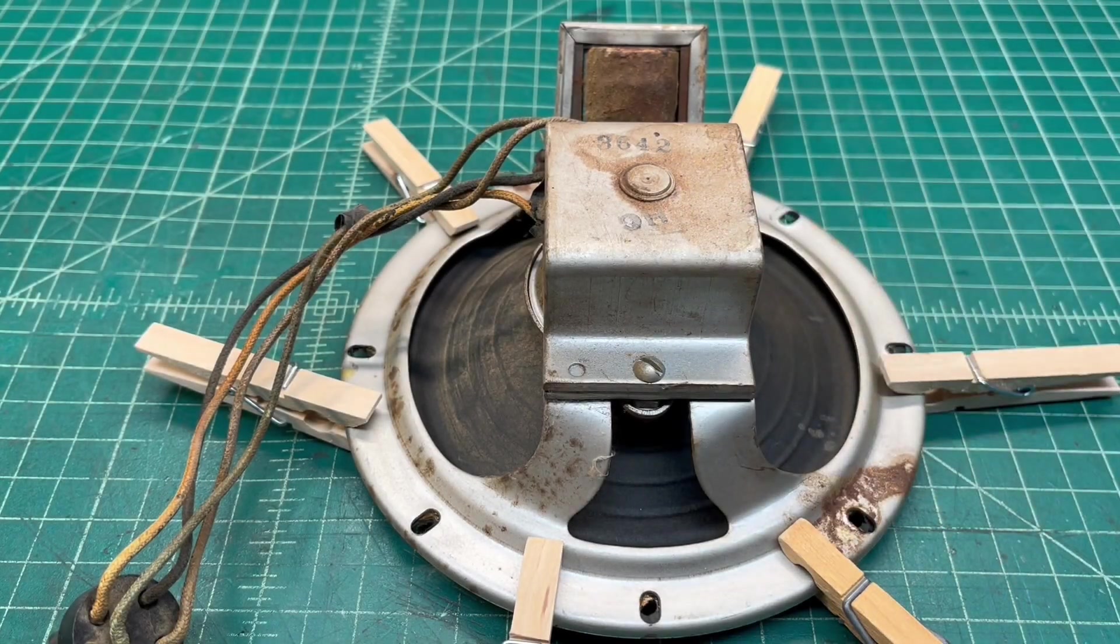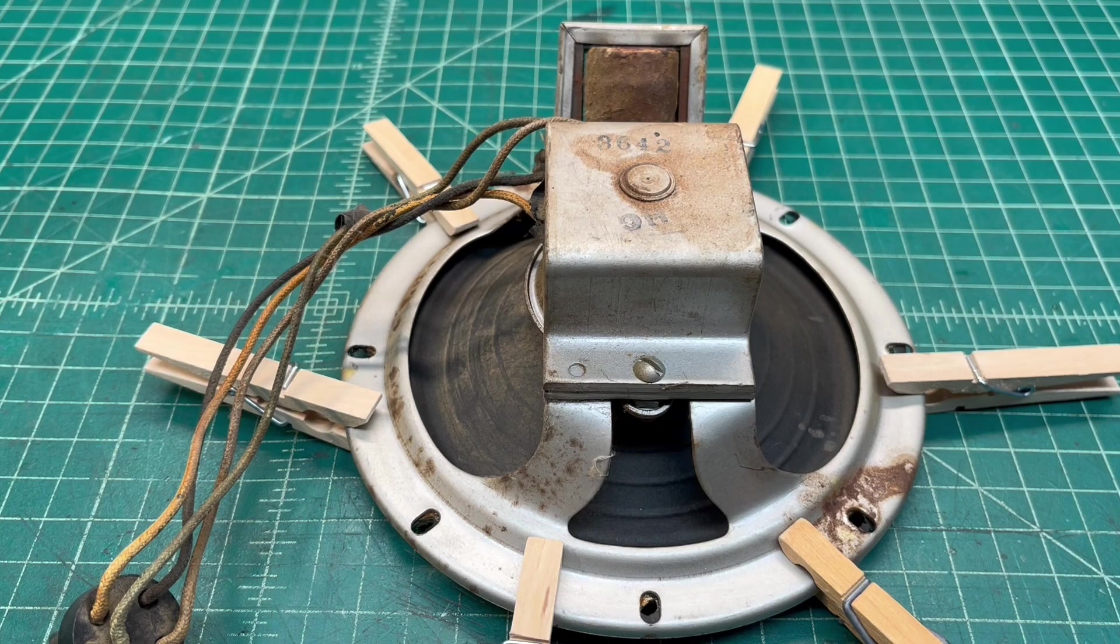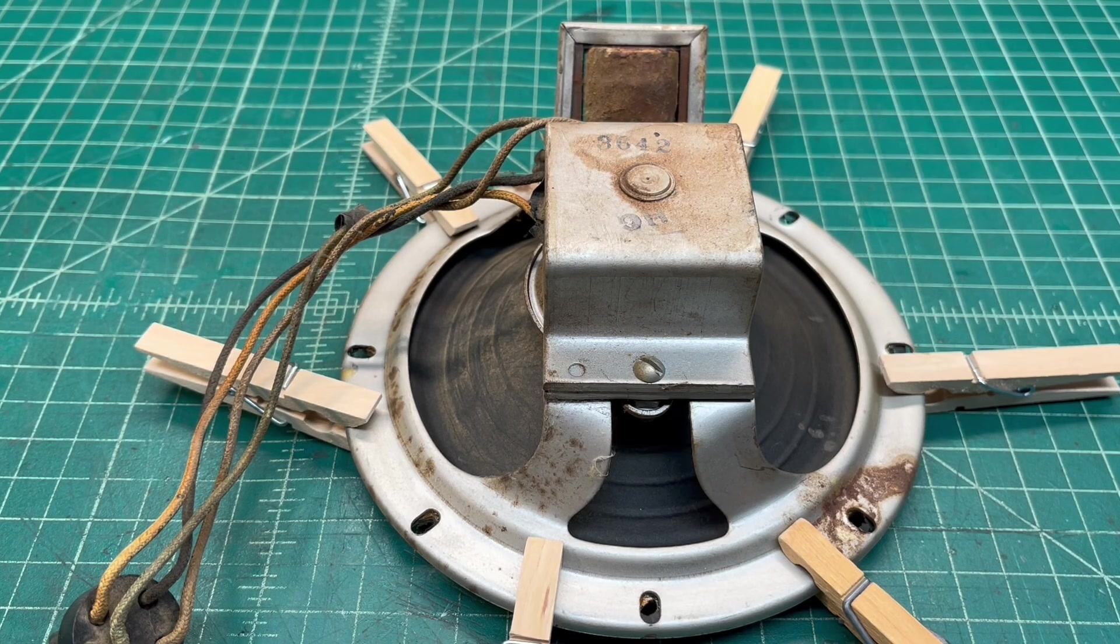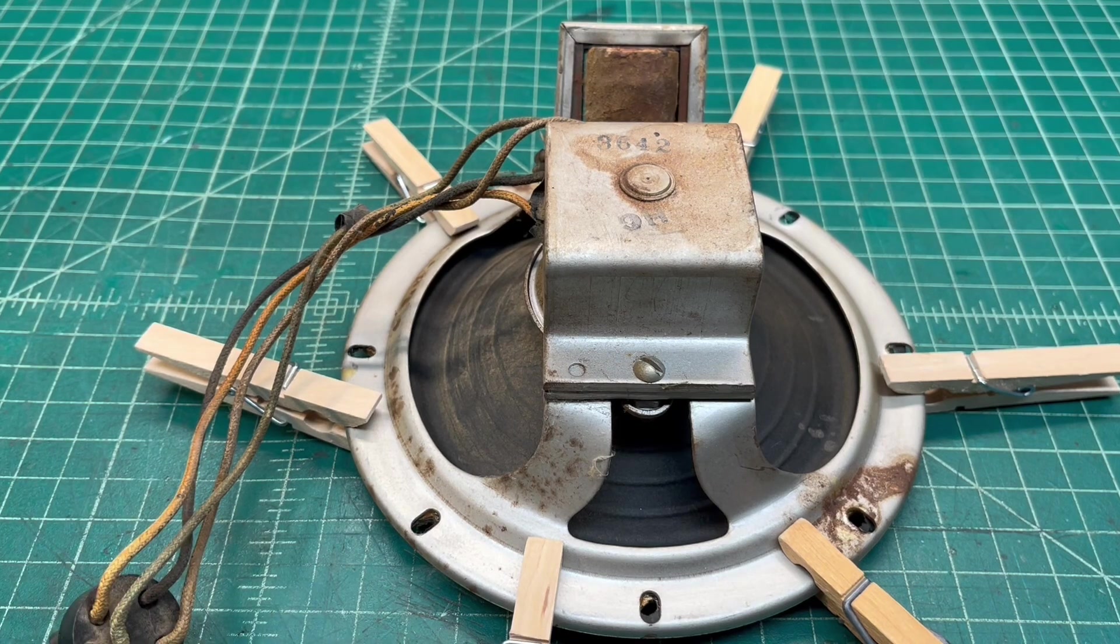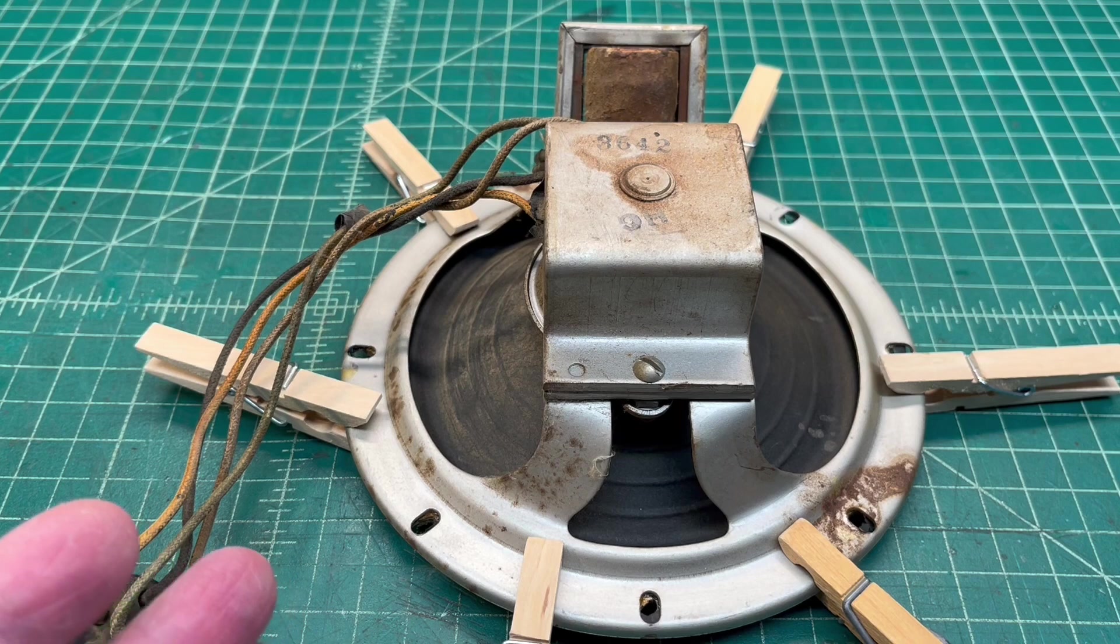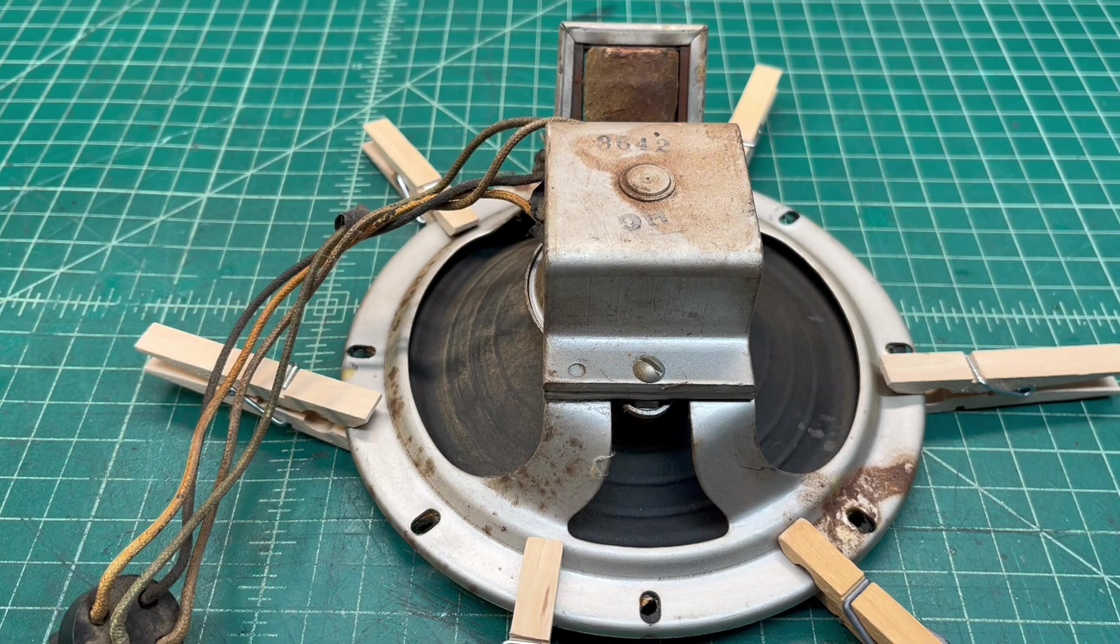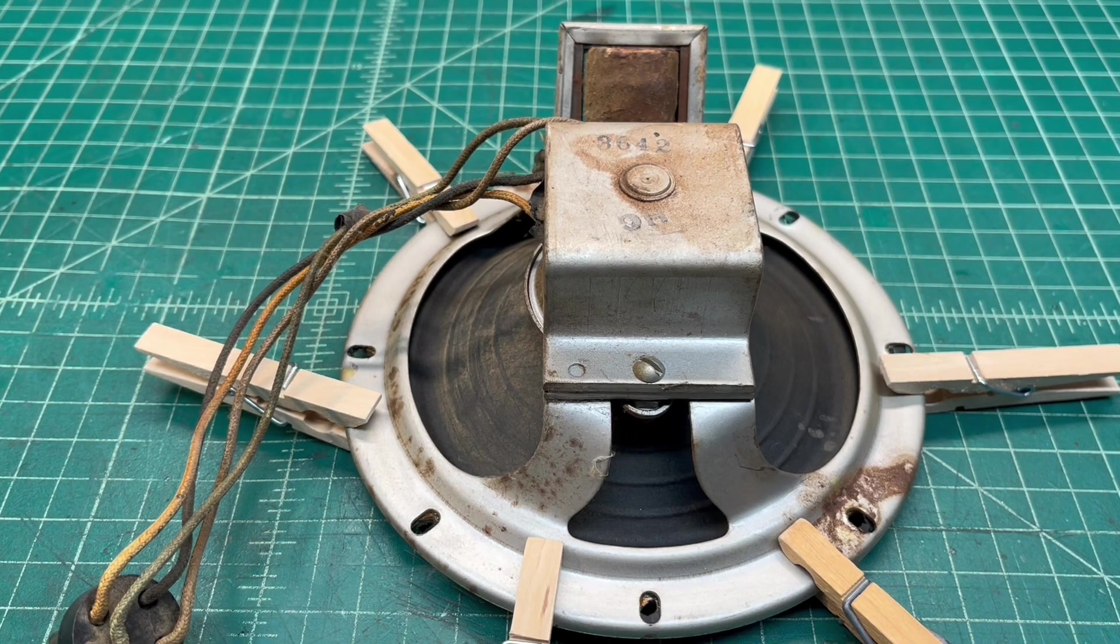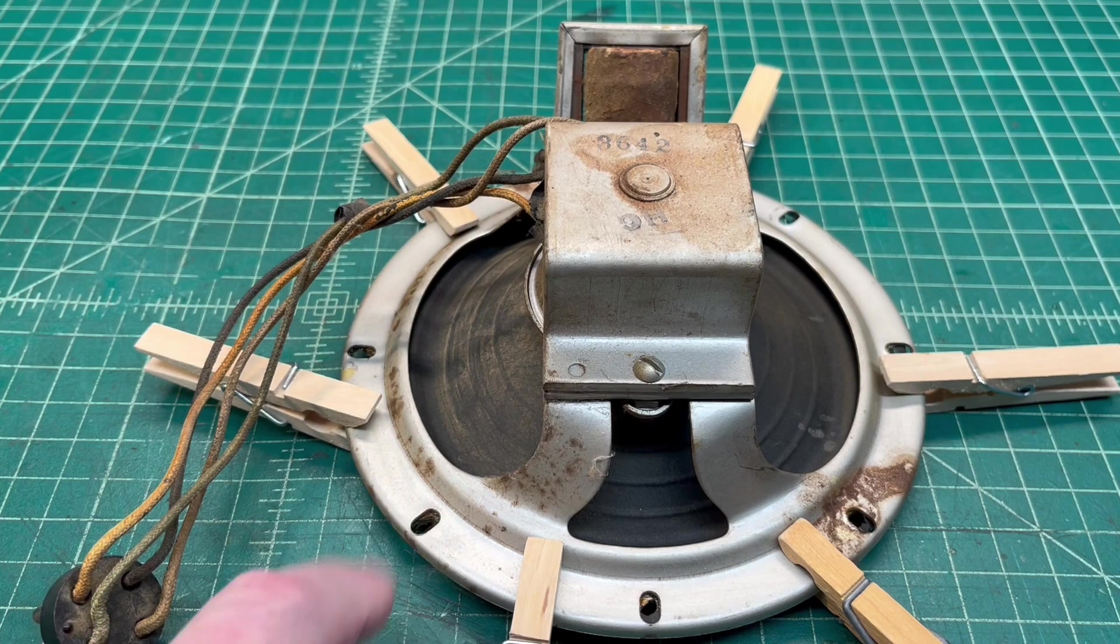As you can see, the loudspeaker's not in real bad shape. There's some rust in places. I'll clean that up probably with some navel jelly and try to free up some of the dust and dirt as well. You'll notice the clothespins, the surround itself, and the cone is separated from the frame or the basket here.